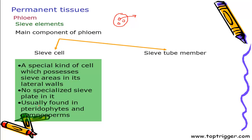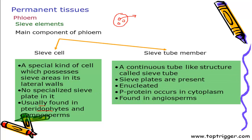Sieve cells are present only in pteridophytes and gymnosperms. Sieve tubes, however, are continuous tube-like structures. Two consecutive sieve tube members are separated by sieve plates. Very interestingly, sieve tubes are living — consisting of living cells — but these cells do not have a nucleus. There is a special protein called P-protein present in the cytoplasm of a sieve tube, and this P-protein helps in the translocation of solutes. Sieve tube members are an advanced feature found only in angiosperms.